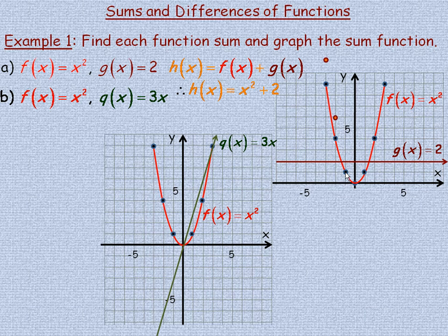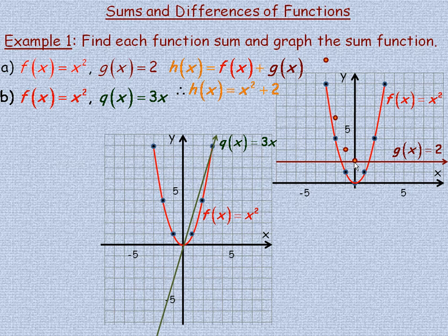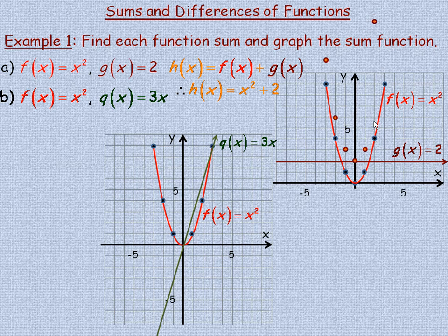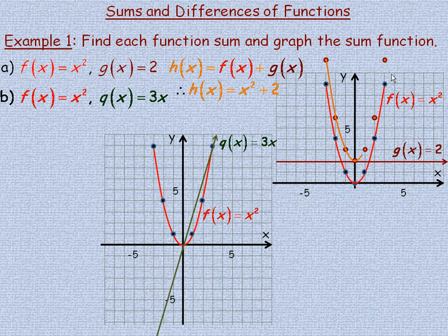At negative 1, the y coordinates are 1 and 2, which add to 3, so negative 1, 3 is on h of x. At x equals 0, we're adding y coordinates of 0 and 2, which add to 2. At 1, the y coordinates are 1 and 2, adding to 3. At 2 they are 2 and 4, adding to 6. At 3 they are 2 and 9, adding to 11. Then we draw a smooth curve between all of those.